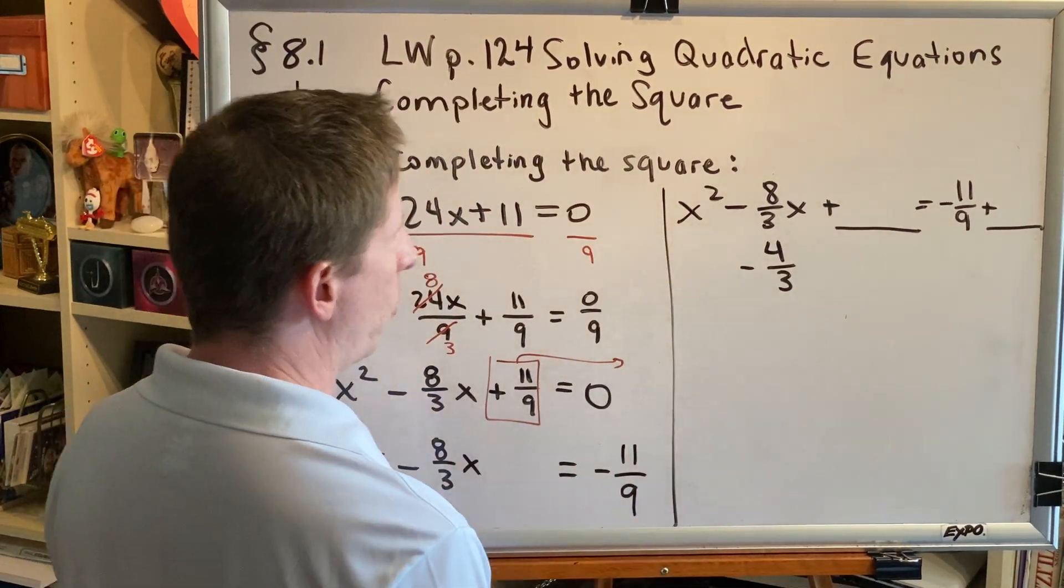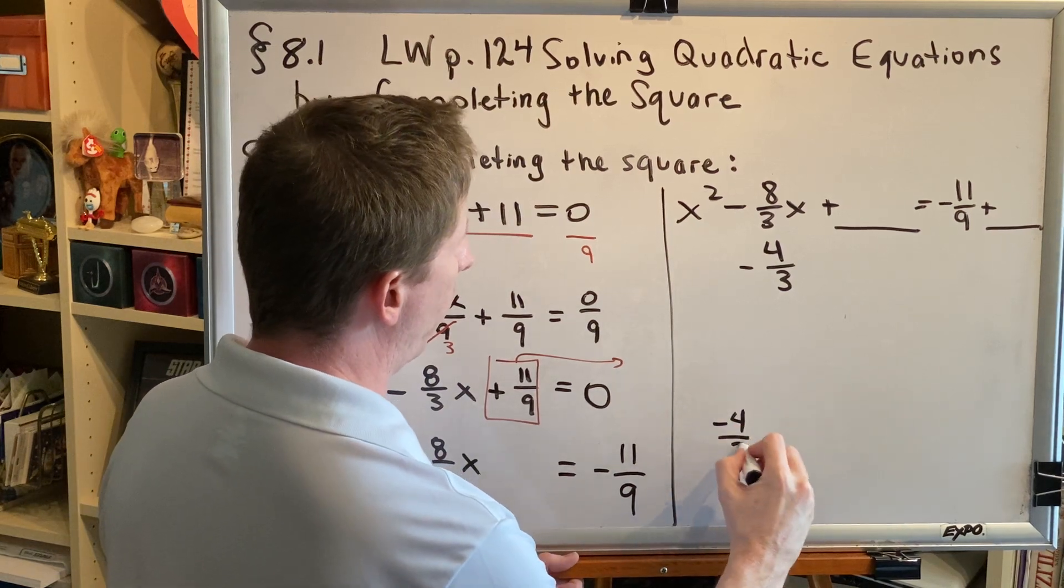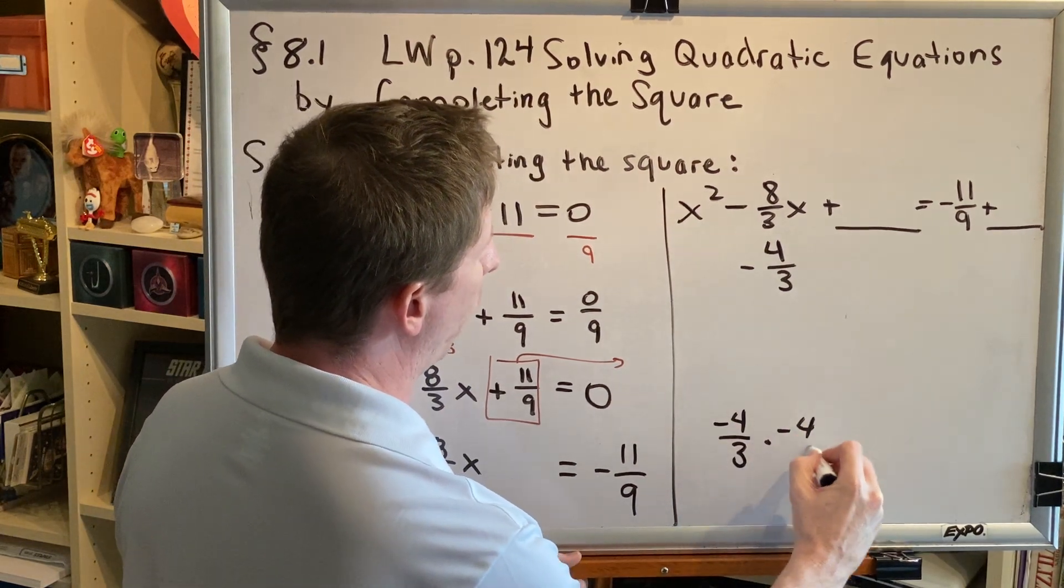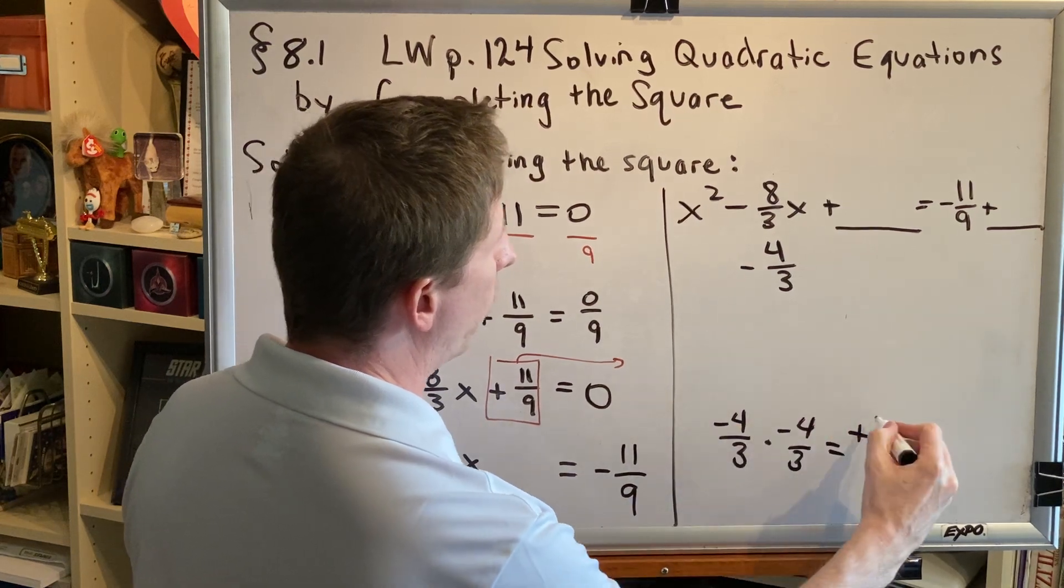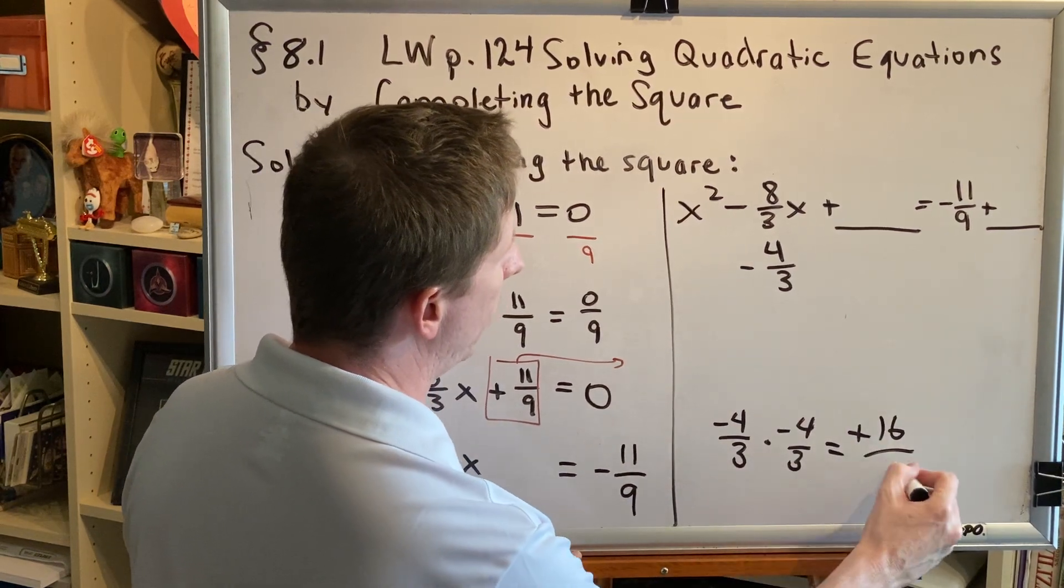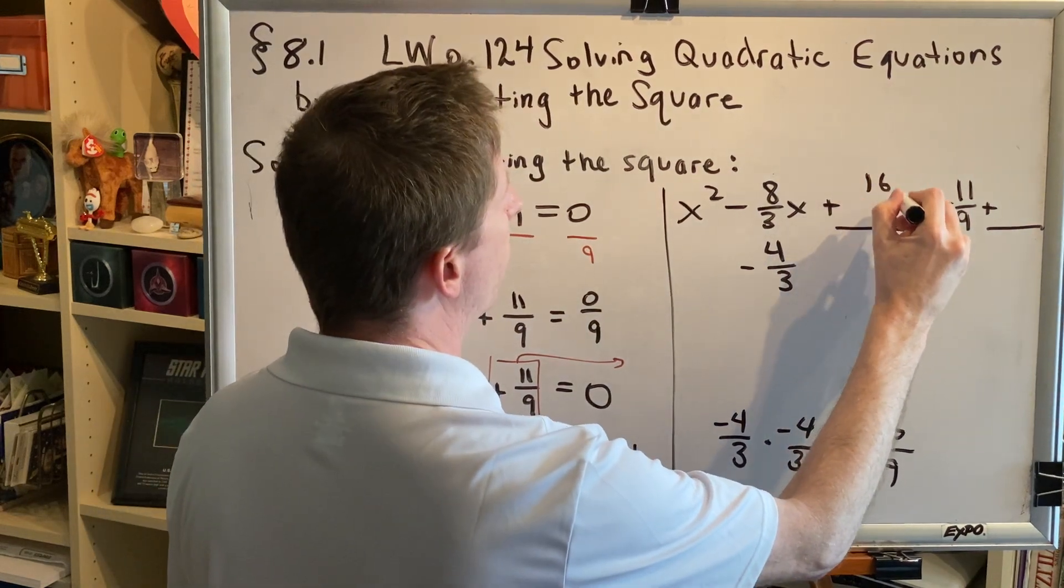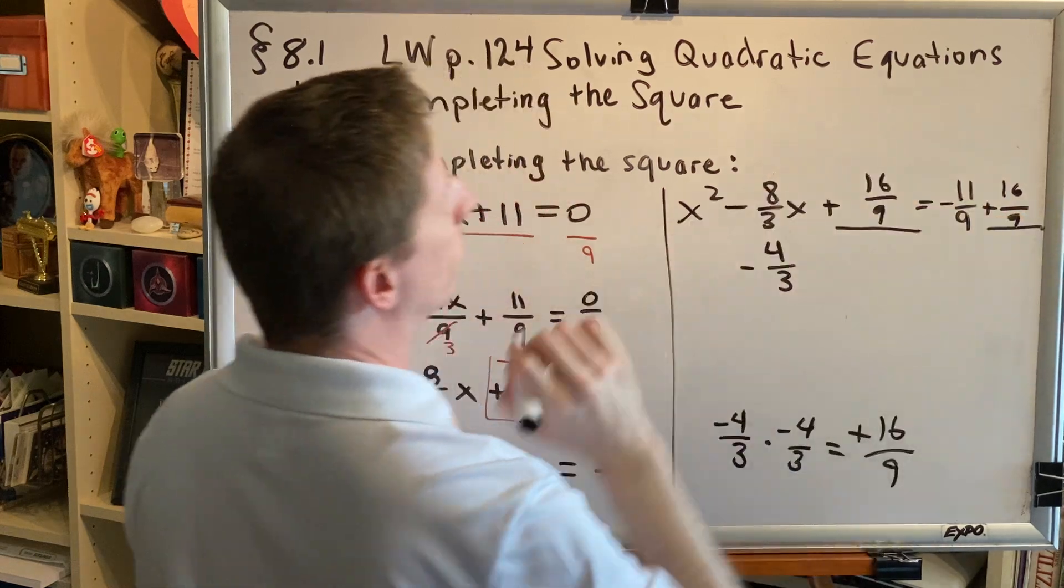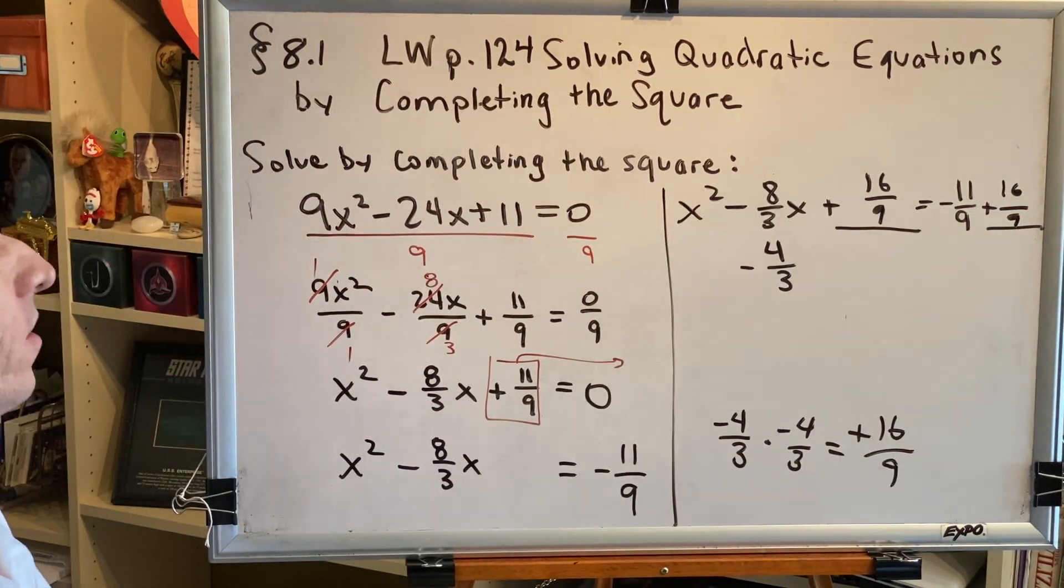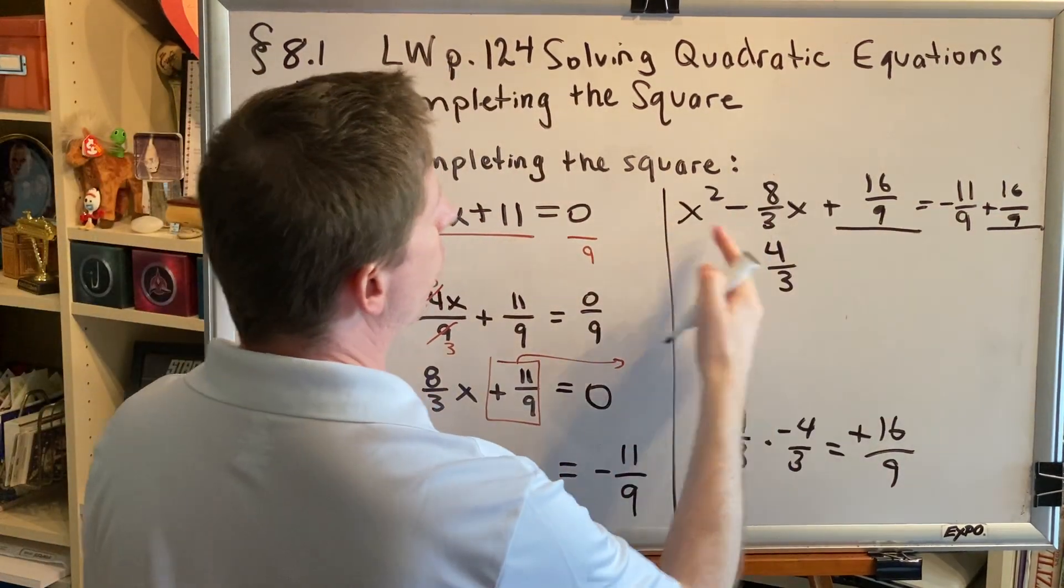What's negative 4 thirds squared? Well, that would be a negative 4 thirds times another negative 4 thirds. Negative times negative is positive. 4 times 4 is 16. 3 times 3 is 9. So 16 ninths is the number that I have to add to both sides. Okay, step 4.